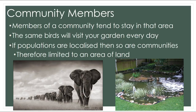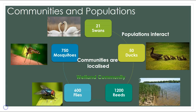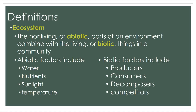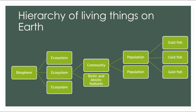That does sometimes limit the area of land available for a community to live on. In this diagram we can see five different populations that exist in what we call a wetland community. An ecosystem is the non-living parts of an environment combined with the living things in a community. You have biotic factors, which include species and communities, and abiotic factors, which are water, nutrients, sunlight, and temperature. A single organism makes up a population; two or more populations make up a community; and a community plus biotic and abiotic features makes up an ecosystem.